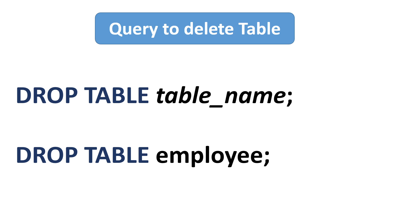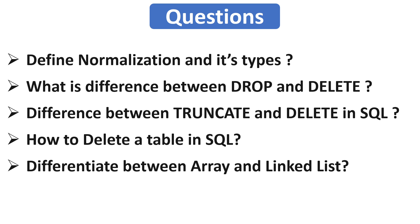Our last question is: what are the differences between array and linked list? Both are ways to organize or store data in memory, but they have differences. An array stores elements in a contiguous memory location while a linked list stores elements randomly in memory. In an array, memory is allocated at compile time because we predefine the size, while in a linked list memory is allocated at runtime, so it can store data dynamically. An array is a collection of similar types of data, while a linked list is a collection of objects called nodes, where each node has two parts: data and address.